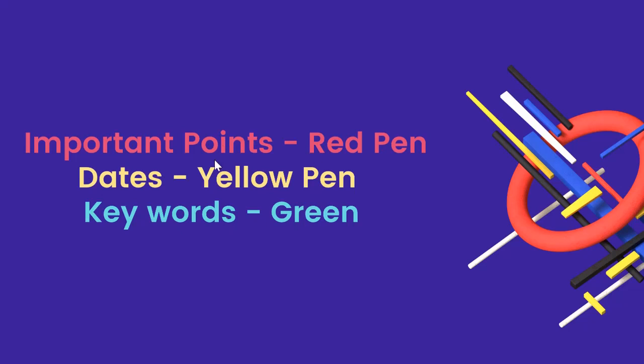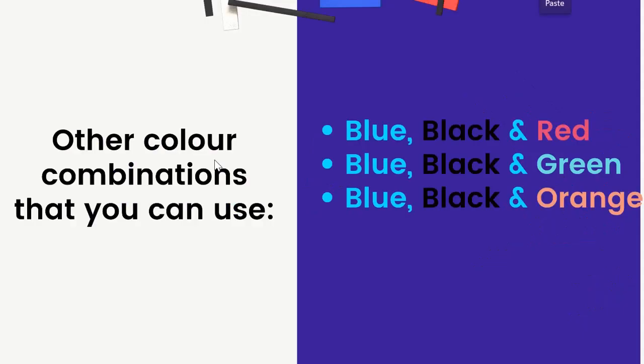You can also make your own codes — ki mere liye important point matlab ye wala pen, date matlab ye wala pen, keyword matlab ye wala pen. Aur combinations mein, you can use black, blue, and red; or black, blue, and some hint of green. Baaki wun cheezein dikhein aapko jo bhi important cheezein hain, baar baar unko parho. Black, blue, and orange use kar sakte hai.